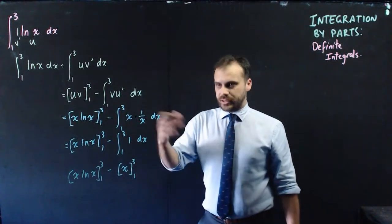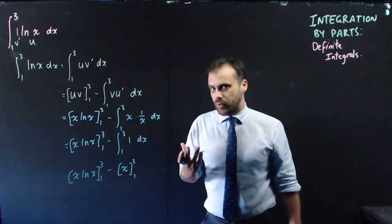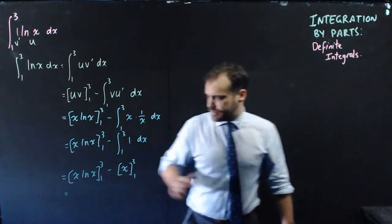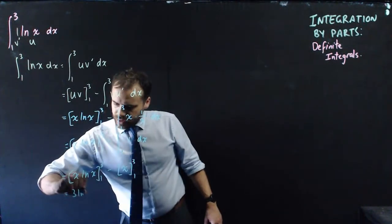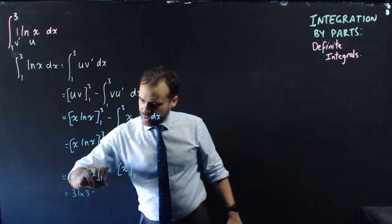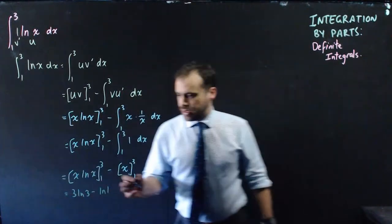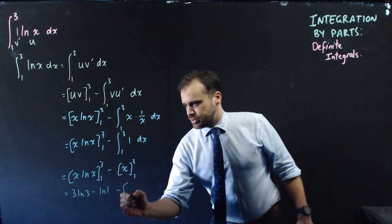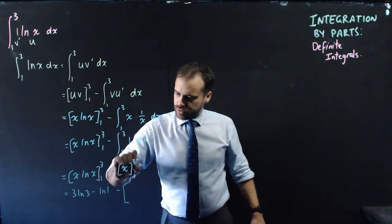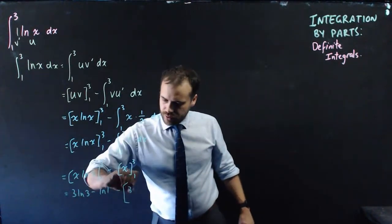And finally, now I can start subbing in that 3 and that 1. So just be careful with your positive and negative signs. We get 3 ln 3 minus 1 ln 1. Okay, and then subtract and then 3 minus 1.